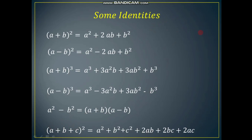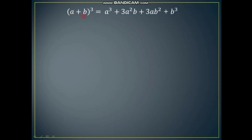These are the identities for which, if we take any values for the variables a and b, the equation gets satisfied. Let us use one of the identities to solve an example. Consider the identity (a + b)³ = a³ + 3a²b + 3ab² + b³. This is also called the expansion formula because it gives the expansion of (a + b)³.